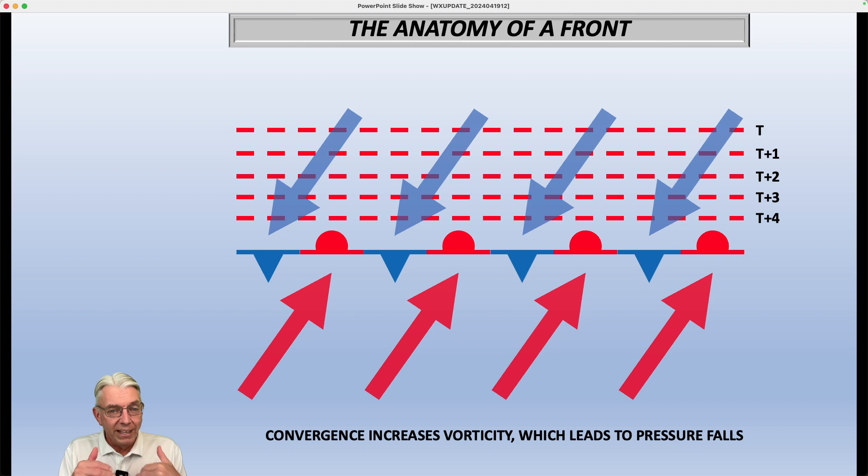And because of the conservation of what we call angular momentum, then they start to spin faster. So anytime you have any existing vorticity at all, and you imply a convergent wind field on it, you are going to increase the amount of vorticity. And once that begins to happen, then the pressure pattern has to adjust to that.